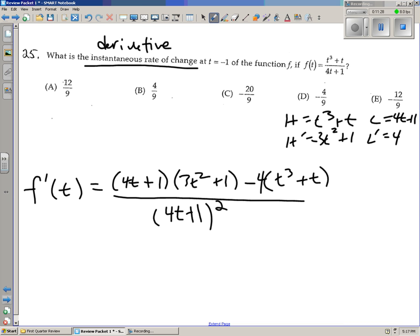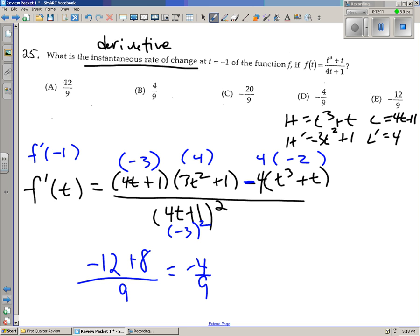So a few things. You could simplify this, but I would not because you're plugging in a pretty simple number. So 4 times negative 1 is negative 4 plus 1 is negative 3. So every time we see this factor, it's going to be a negative 3. 3 times negative 1 squared is 3 plus 1 is 4. So I'm really just doing f prime of negative 1 in blue here. 4 times t cubed, negative 1 cubed is negative 1 plus a negative 1 is negative 2. So now we have a pretty easy problem here. So we have negative 12, a negative 4 times a negative 2 is a positive 8 over negative 3 squared is 9. So we end up getting negative 4 ninths, and that's choice D.